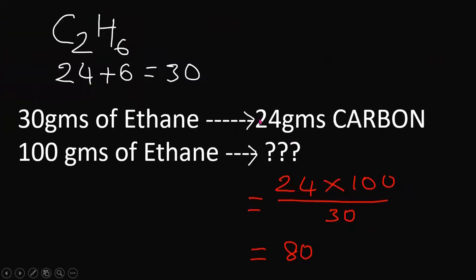30 grams of ethane has 24 grams of carbon. 100 grams of ethane has: 24 × 100 ÷ 30 = 80. The weight percentage of carbon in ethane is 80.